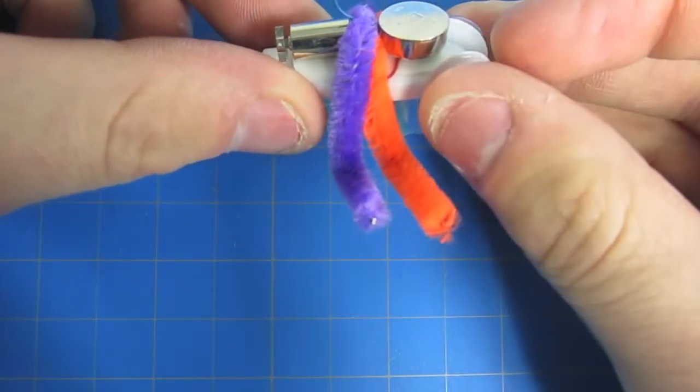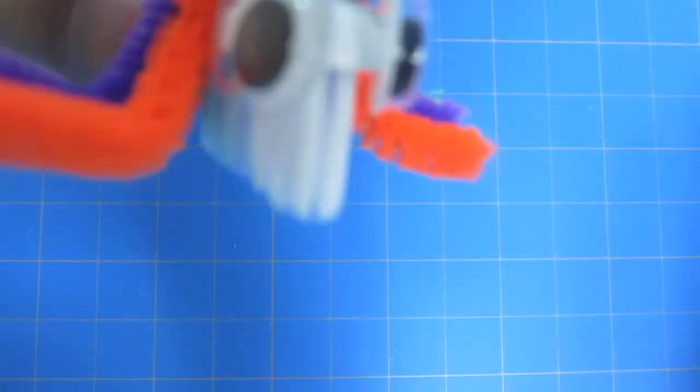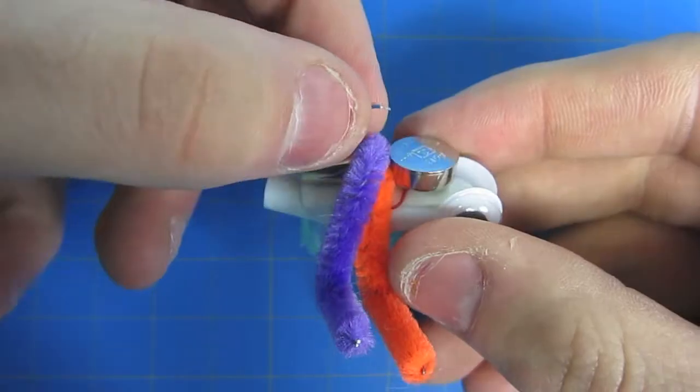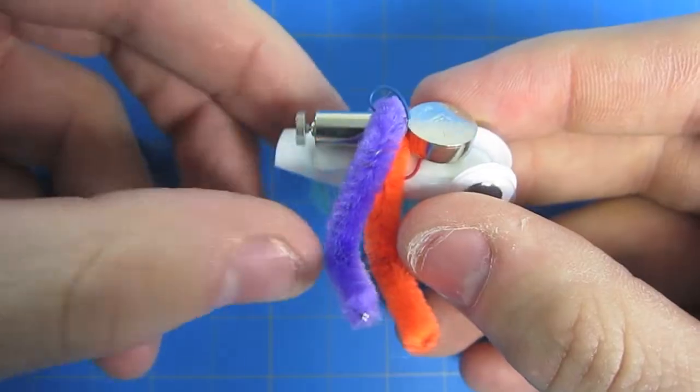Use the other wire lead to complete the circuit by touching the top or the side of the battery. The side works best as it will hold itself in place due to wire tension. After that, your Bristlebot is good to go.